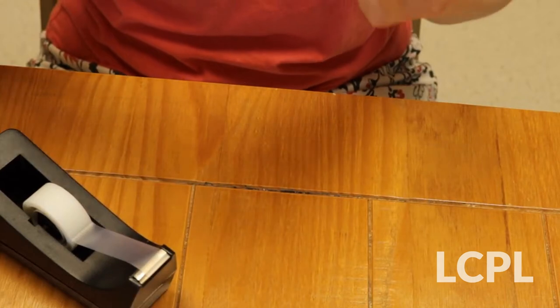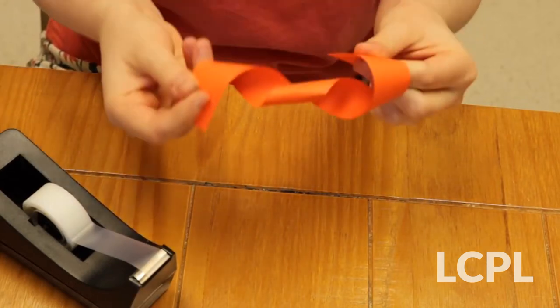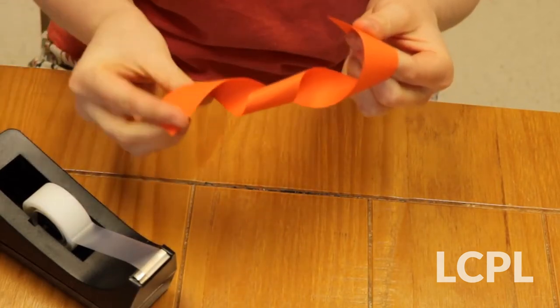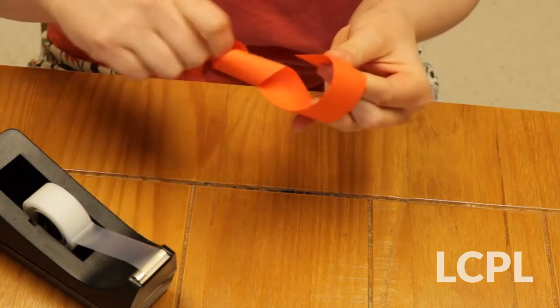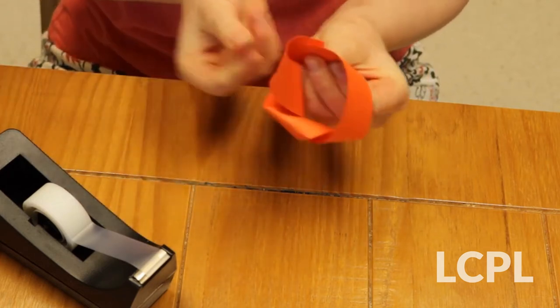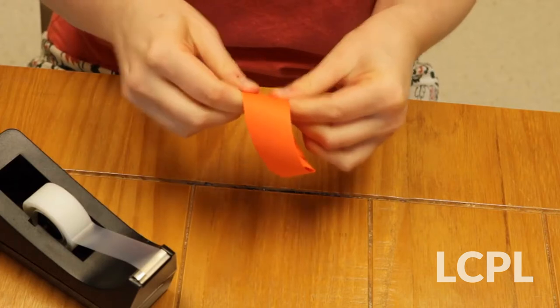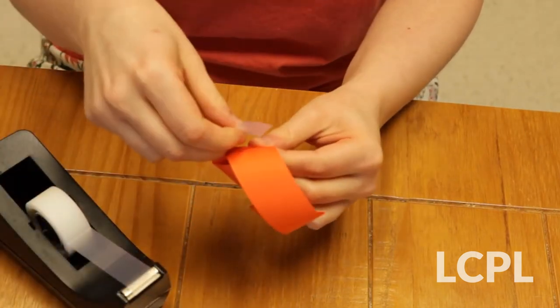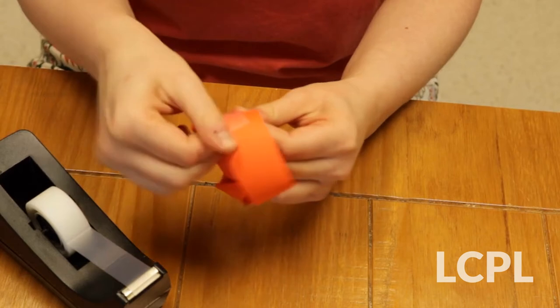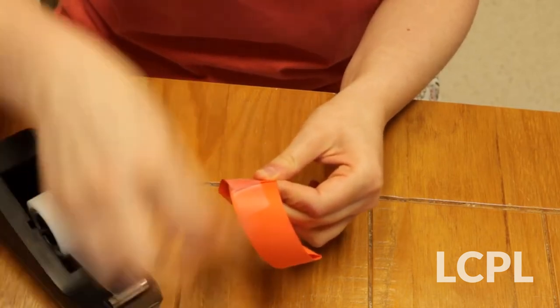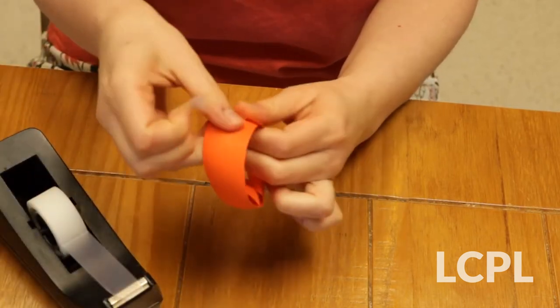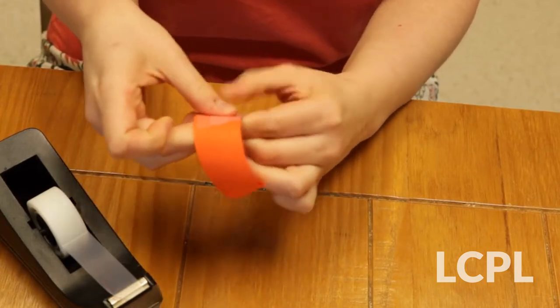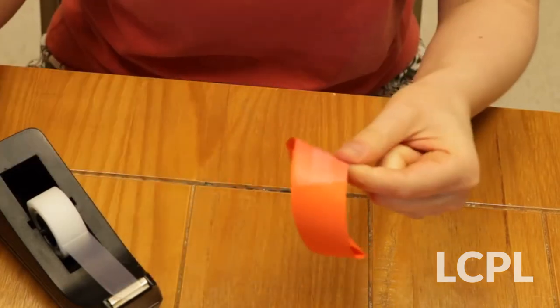So we're actually going to do something a little bit different here. I'm going to twist the paper, here's once, I'm going to twist the paper twice and then tape it together. You can also use glue, doesn't have to be tape, but you want to make sure that it's going to stay together.